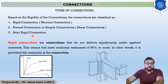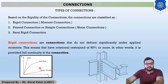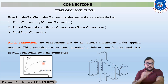The third type is semi-rigid connections. In semi-rigid connections, it restrains shear force but only partially restrains moment. So these are the three types of connections based on rigidity. In the graph shown, rigid connections restrain both shear force and bending moment; simple or flexible connections restrain only shear force; and semi-rigid connections restrain shear force but partially restrain bending moment.